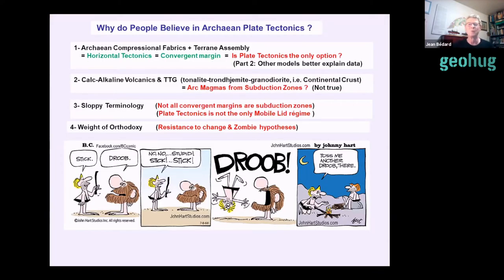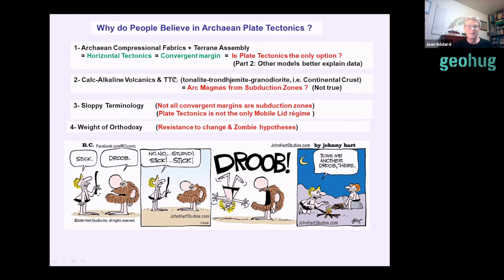Let's recap why people believe in Archean plate tectonics. There are two quite good reasons. First, there is solid evidence for Archean compressional fabrics and possibly terrane assembly, which requires some horizontal tectonics and convergent margins. The question is whether plate tectonics is the only way to achieve this. Second, the hypothesis rests on the fact that calc-alkaline volcanics and TTG complexes — which constitute the actual continental crust — are equated with arc magmas formed in subduction zones. I'm going to argue that's just not true, and once we kick these two legs out, the hypothesis crashes down and we need a better one.